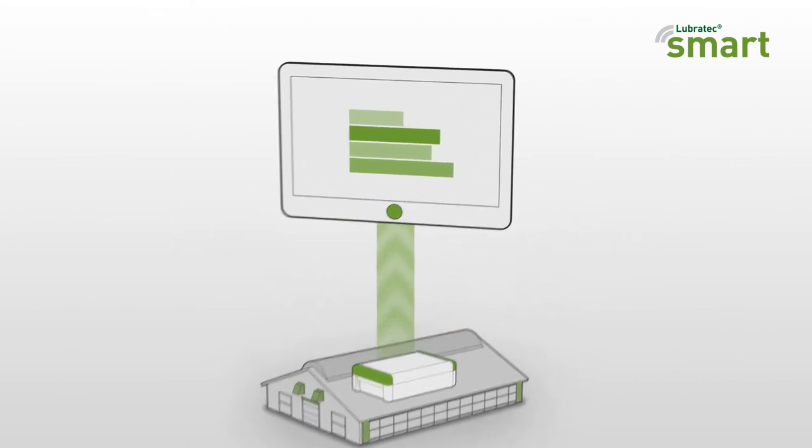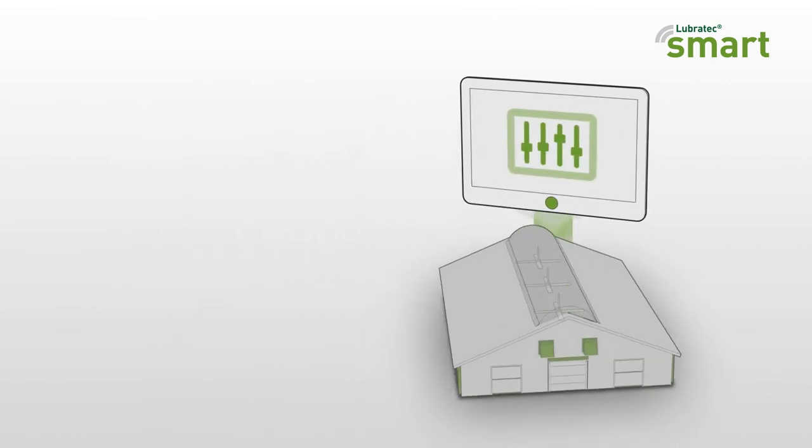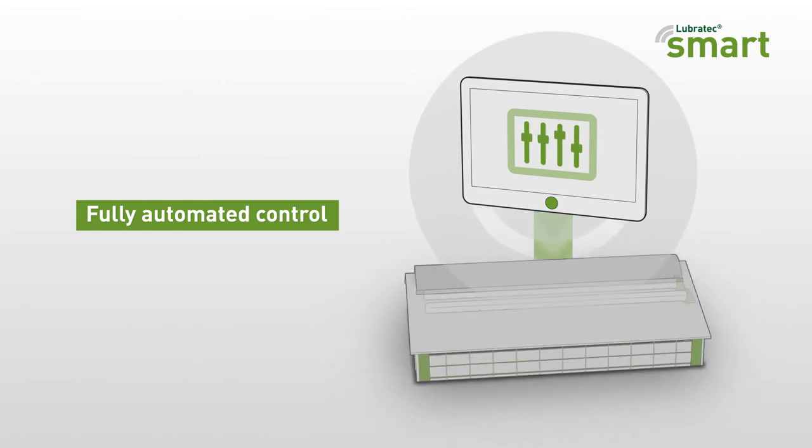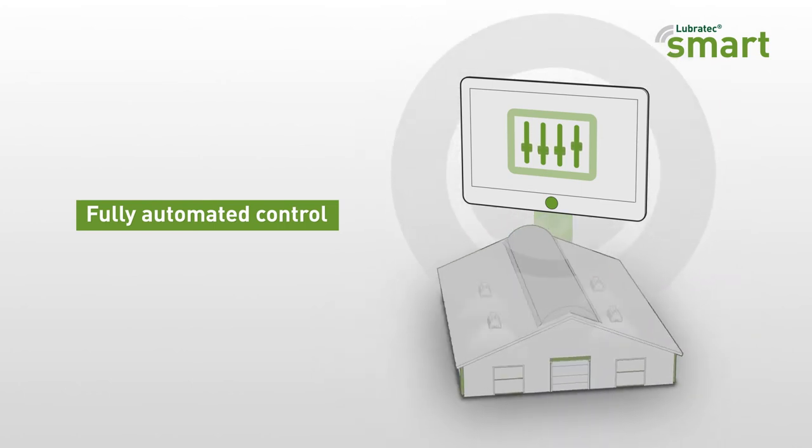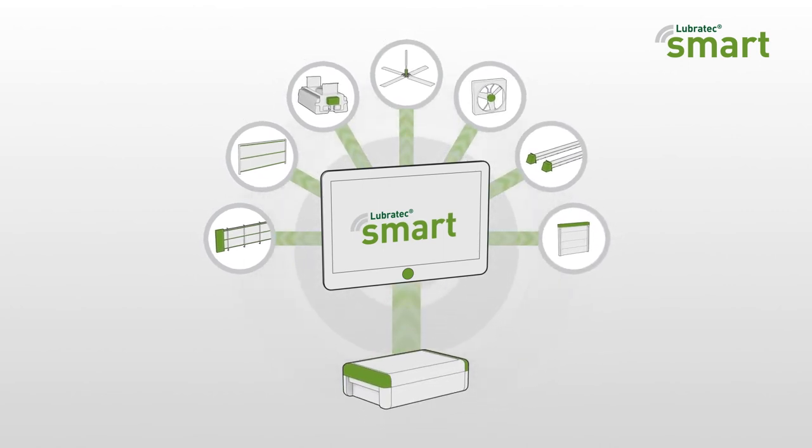The intelligent software can give concrete recommendations for action or regulate your barn climate fully automatically. It uses intelligent algorithms and clever networking of all components to regulate ventilation and lighting technology and controls your barn climate autonomously.